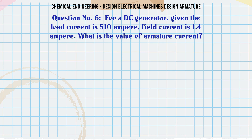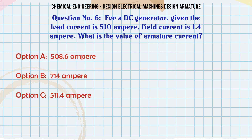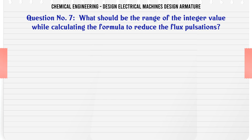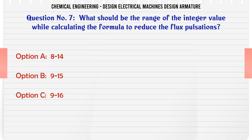For a DC generator, given the load current is 510 Ampere and field current is 1.4 Ampere, what is the value of armature current? Options: a) 508.6 Ampere, b) 714 Ampere, c) 511.4 Ampere, d) 364.28 Ampere. The correct answer is 511.4 Ampere.